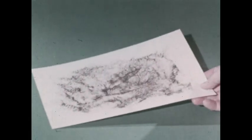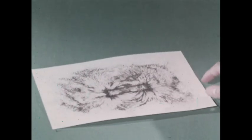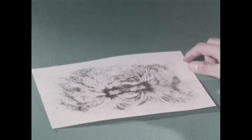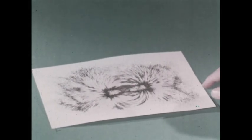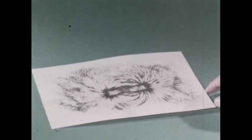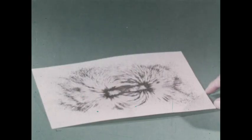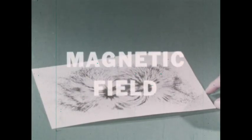When a bar magnet is held under a sheet of paper on which iron filings are placed, the filings form a pattern like this. These filings follow the invisible lines of force which make up a magnetic field. Every magnet is surrounded by a magnetic field. The lines of force are concentrated at the ends or poles of the magnet where the field is strongest.